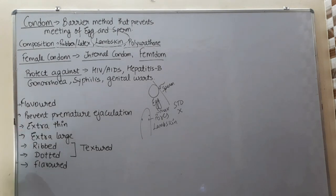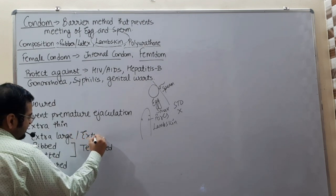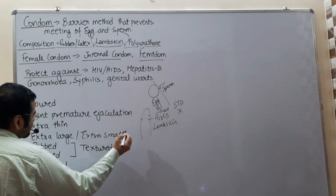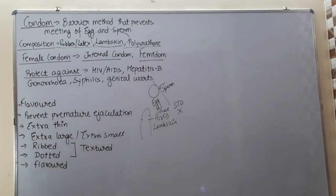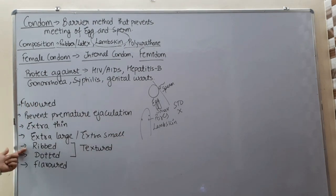There are certain special types like extra thin, extra large, or extra small. Then we have textured condoms like ribbed, dotted, and flavored.